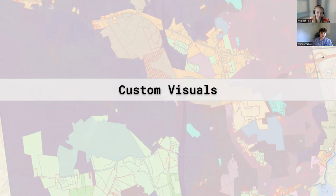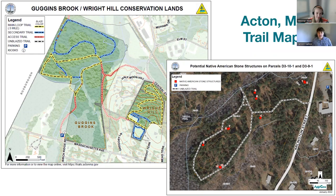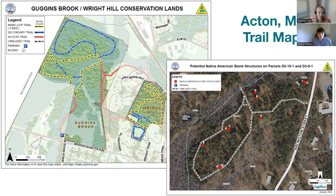Now let's talk about some custom visuals tailored to specific needs of towns we've worked with. For Acton's trail map, the town of Acton has a couple of different trail locations. On the left is a pretty standard trail map we produced for them — something you can laminate and put at the trailhead right at the entrance. There's also a link at the bottom to a website giving that same information on your phone as you walk the trail. Acton also has Native American stone structures on one of their parcels, so we created a map highlighting a potential trail as well as the locations of those historic structures.